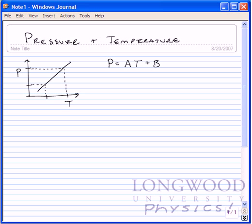When the volume of a low-density gas is held constant, pressure and temperature are related by a linear equation, as shown here and as diagrammed here in this image.